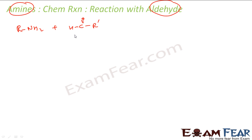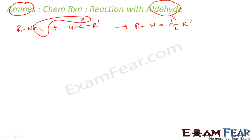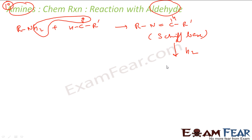What happens here is H2O will come out, and what you get is R-N double bond C with H and R'. This is a Schiff base. Please note this is only with primary amine, because you need two hydrogens. So primary amine will react with aldehyde to form a Schiff base, and you can further reduce this to a secondary amine.